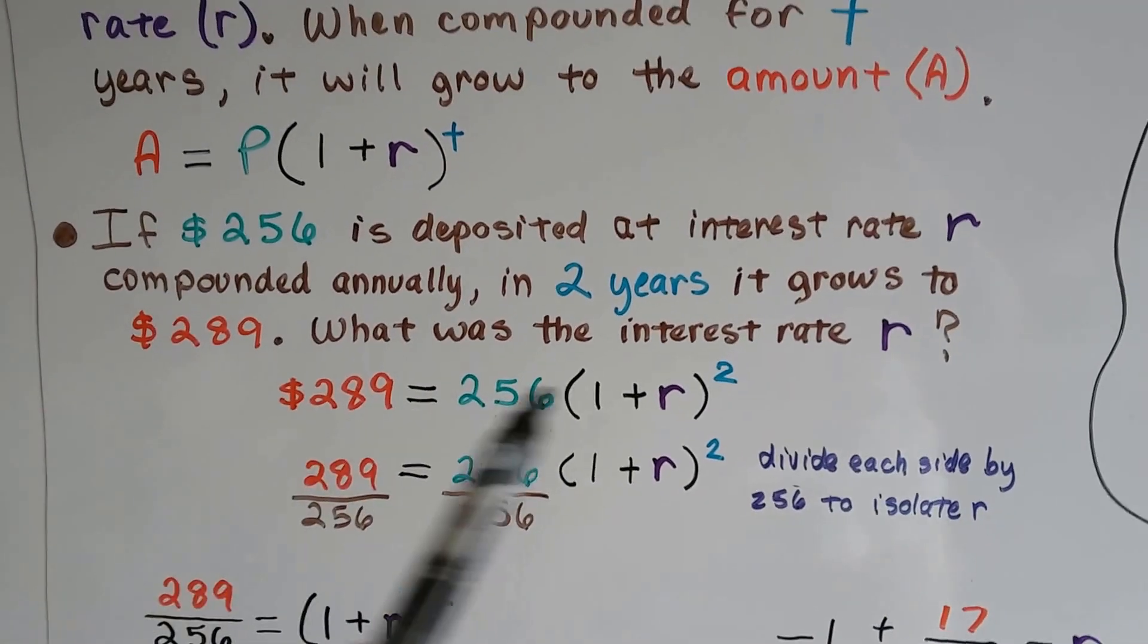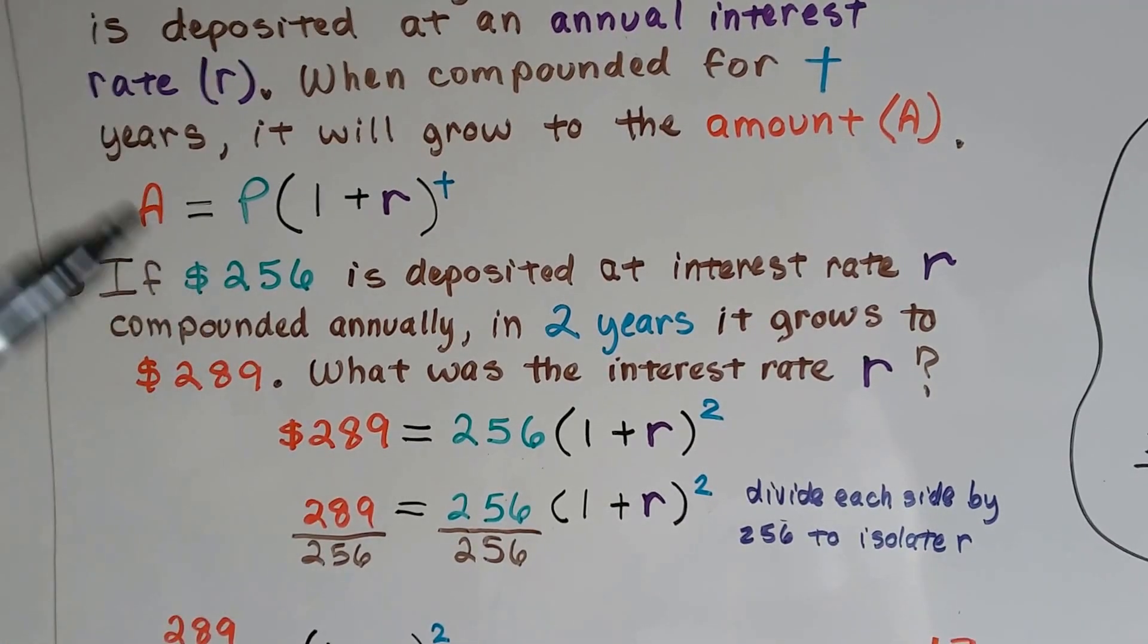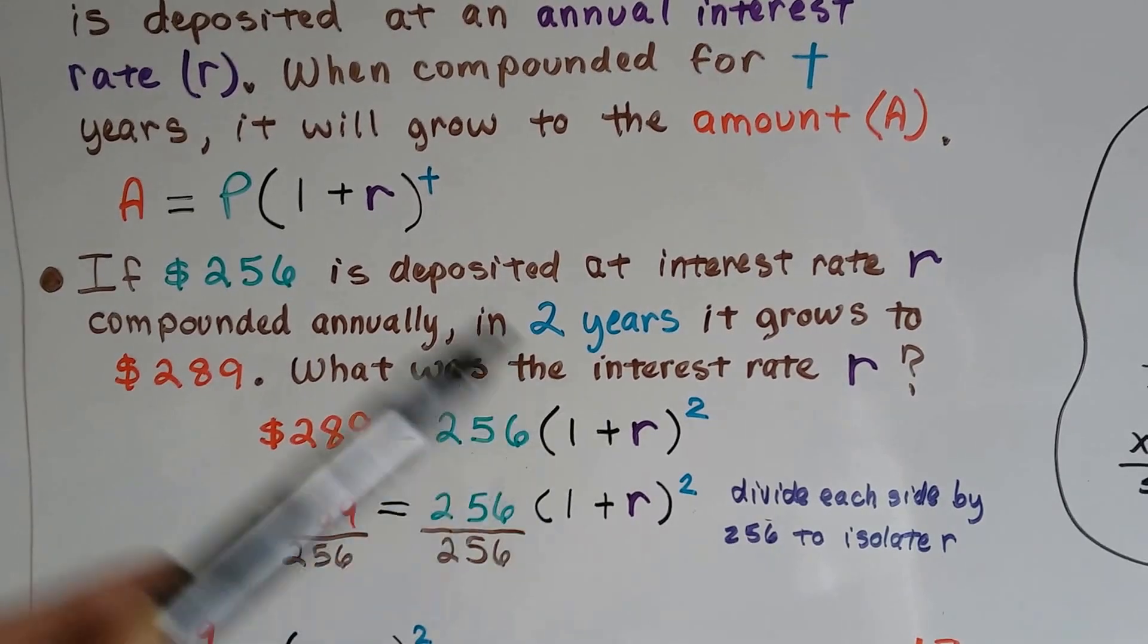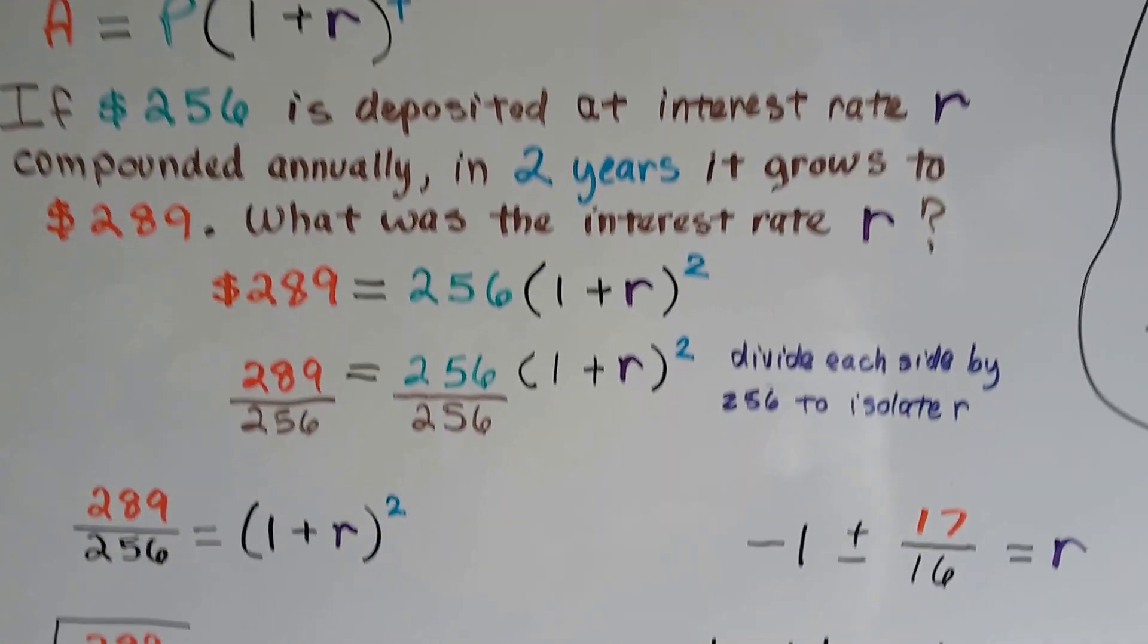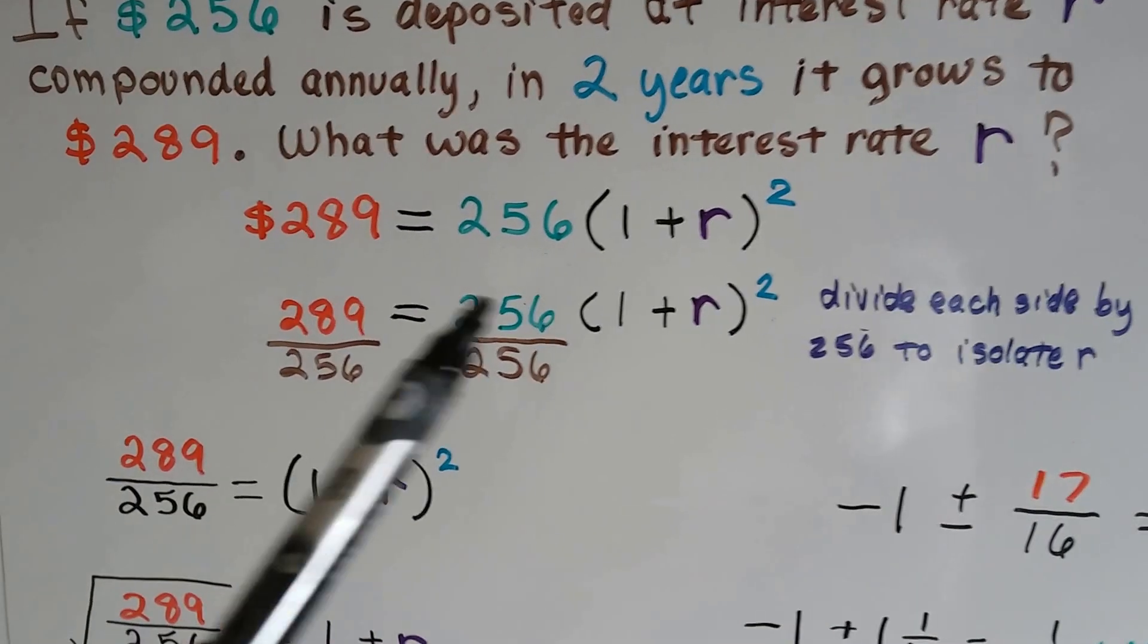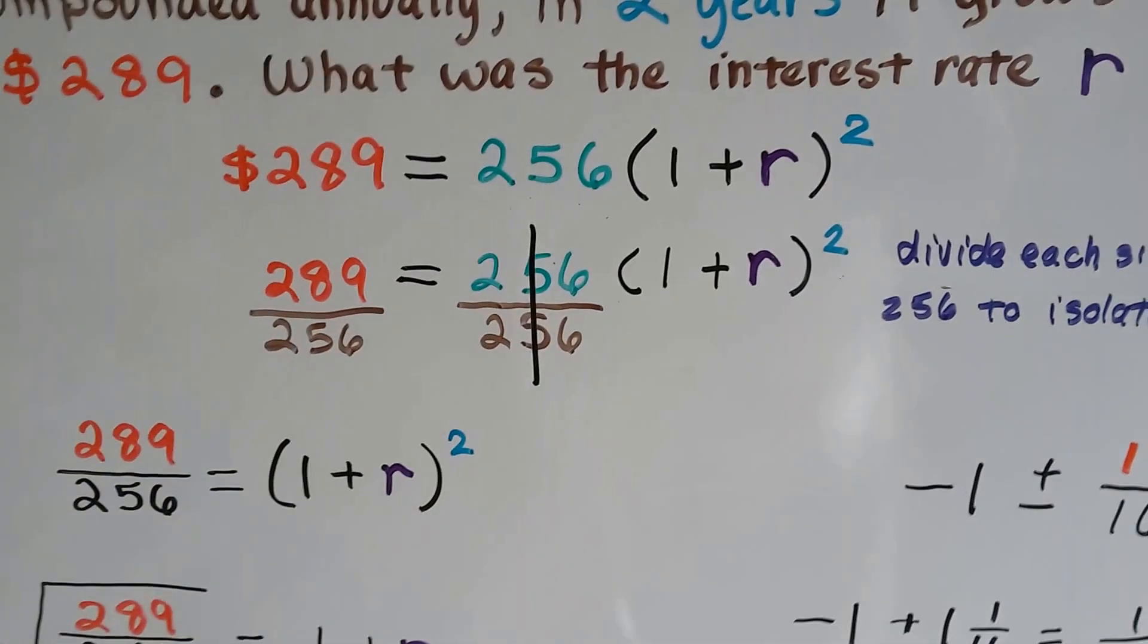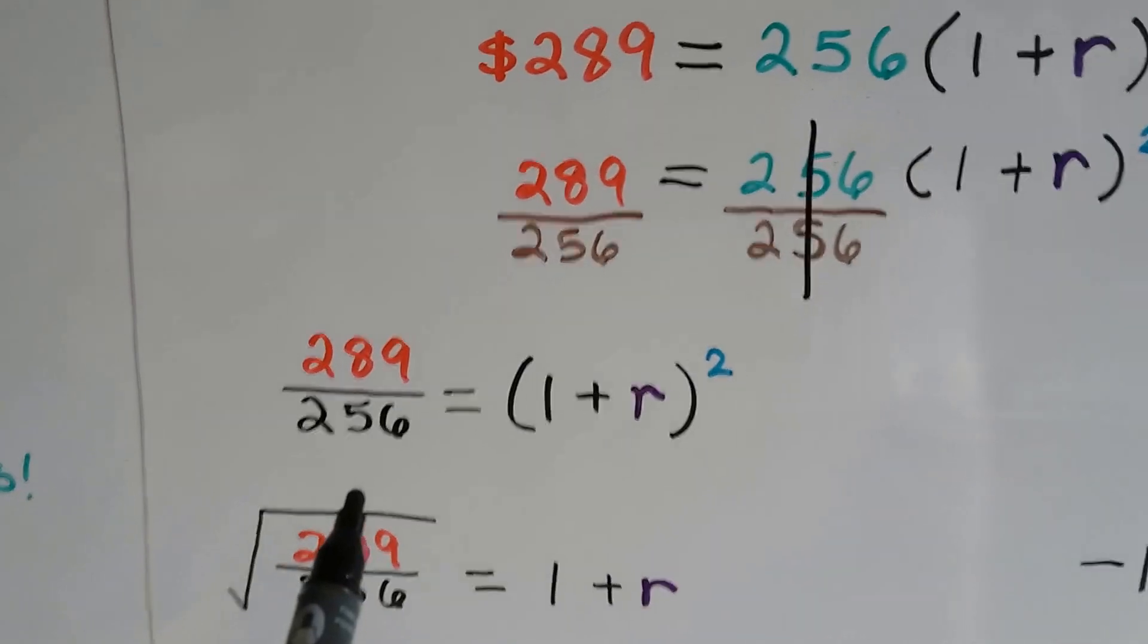We plug our values into this formula. We've got our red, 289. We've got our green, 256 for P. We don't know what the R is, but we know the years are two. So we've got our little two there. And we need to isolate this R.